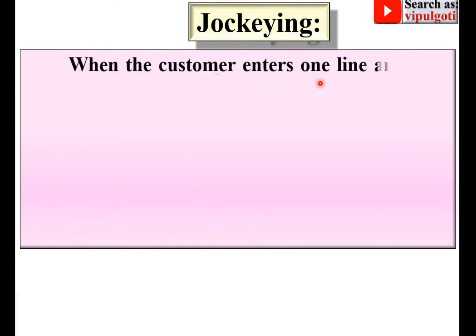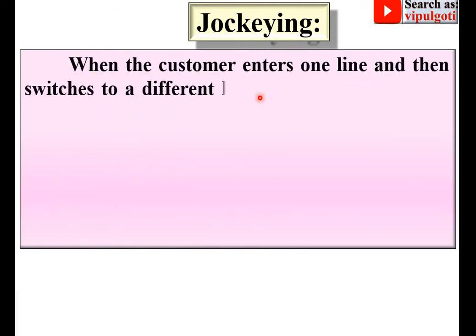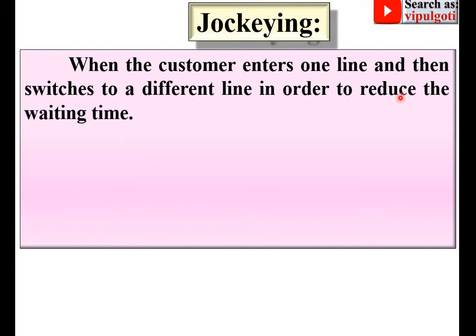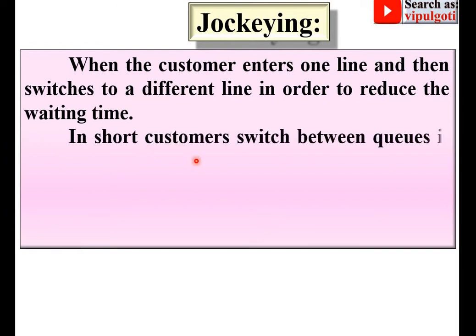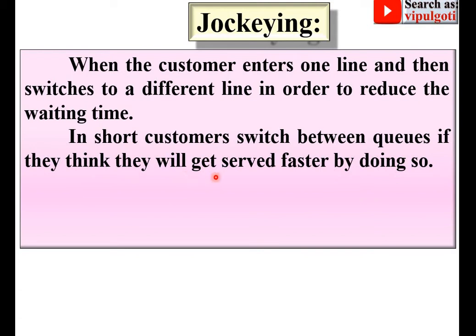Next: jockeying. When the customer enters one line and then switches to a different line in order to reduce the waiting time, that is called jockeying. In short, customers switch between queues if they think they will get served faster by doing so.